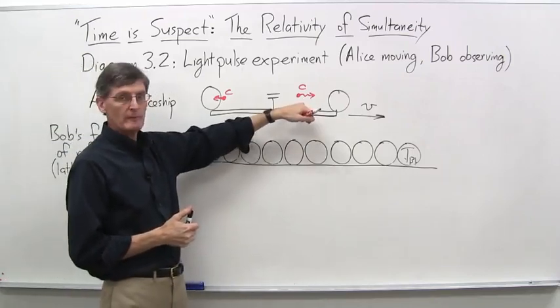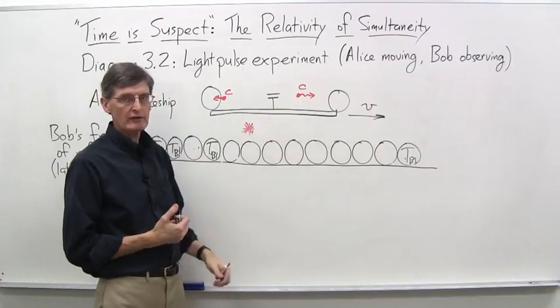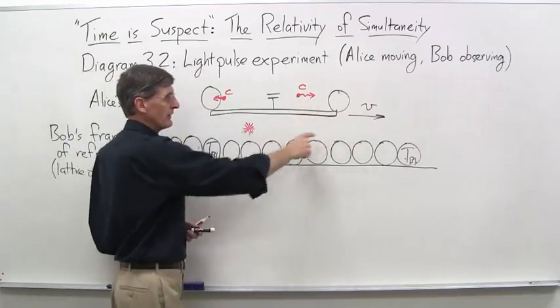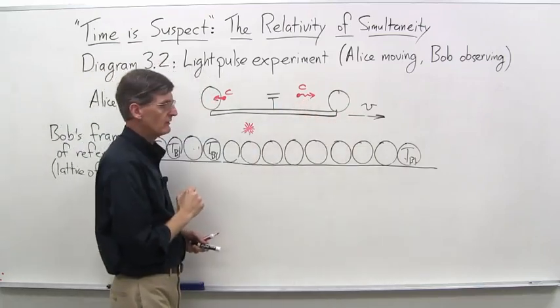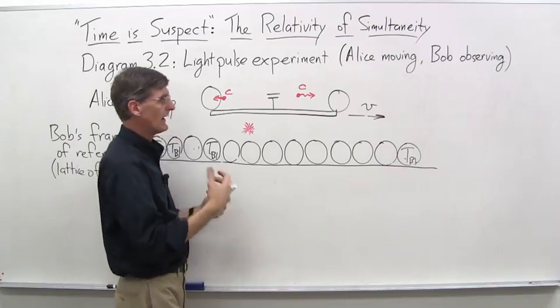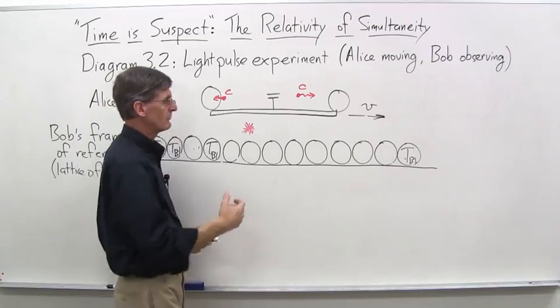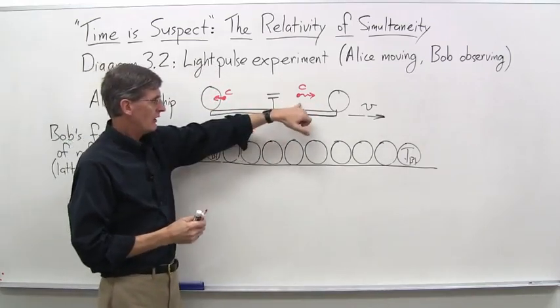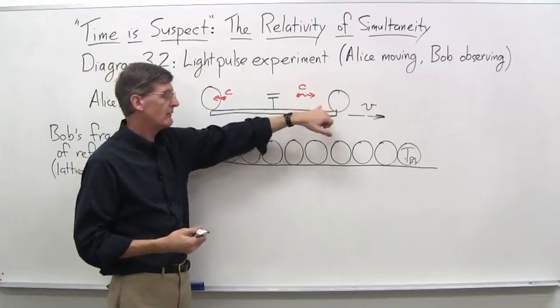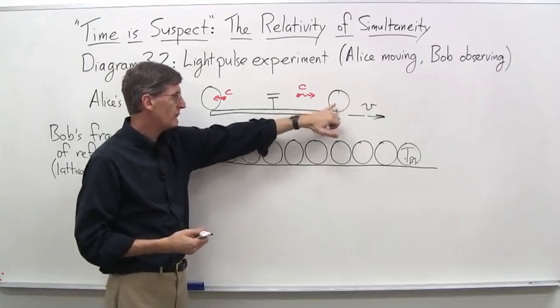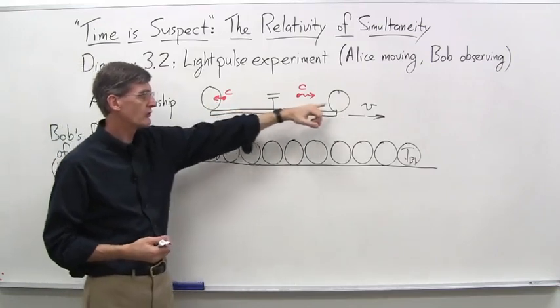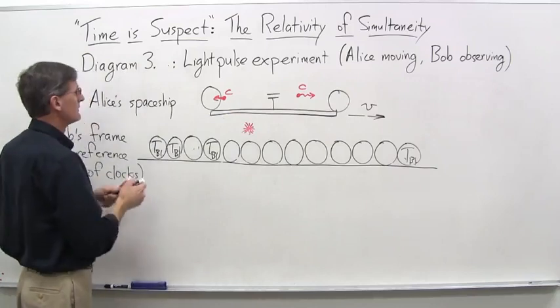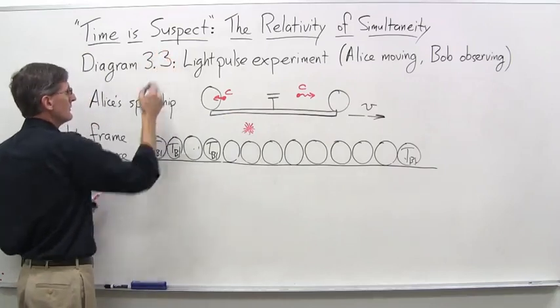So it says, okay, leftward-going light pulse hits at time TB1. All my clocks are TB1. But he's still observing the rightward-going light pulse. It hasn't reached that clock yet. In fact, it's not going to reach the clock until a little bit later. It will eventually catch up. Obviously, the speed of light is going to be faster than V here, V being less than the speed of light. But speed of light goes at C. It's valiantly trying to catch up to V. Eventually, it will catch up to V, but not yet. This one reaches here first. This one is still heading in that direction. So that leads us to diagram 3.3 here.